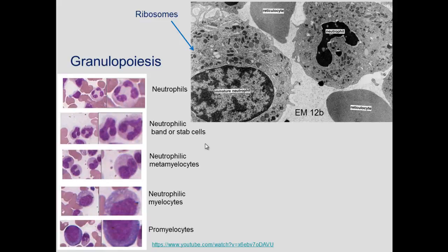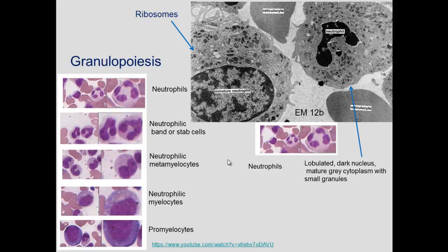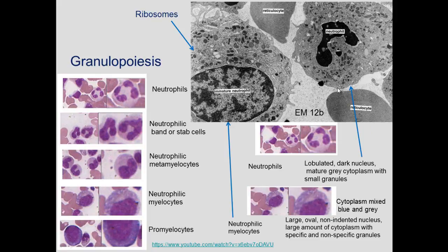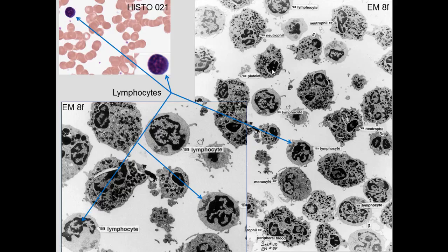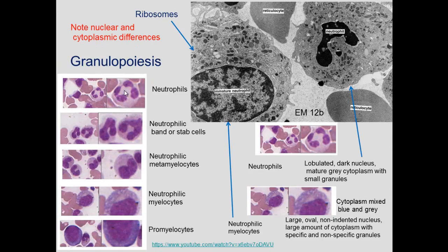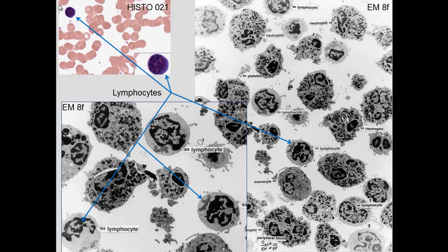Looking at granulopoiesis, the mature neutrophil has a lobulated nucleus, dark nucleus, and gray cytoplasm composed of both light and dark granules. A neutrophilic myelocyte (precursor cell) has an oval, non-lobulated nucleus with many non-specific granules and some specific granules. During maturation, the nucleus changes from spherical to oval to highly indented and lobulated, while the cytoplasm changes from blue to a combination of gray, and ultimately gray as maturation occurs.